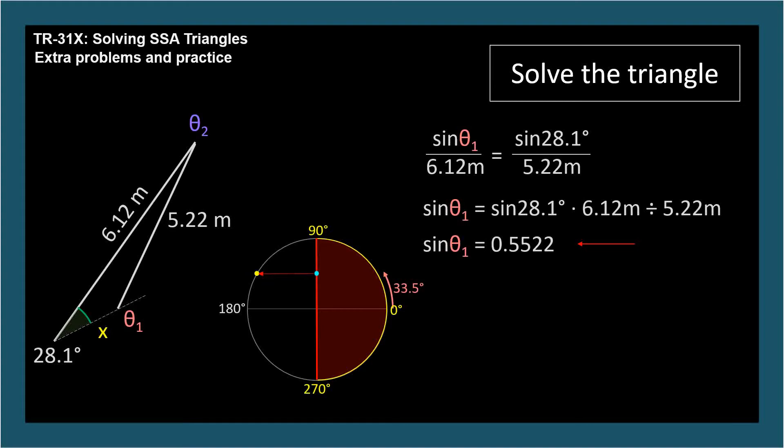We can find it using symmetry across the y-axis. The acute angle is 33.5 degrees positive from 0 degrees, so the obtuse angle is 33.5 degrees back from 180 degrees, so 146.5 degrees.